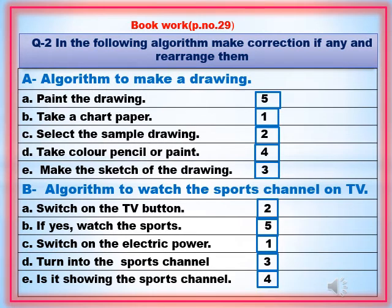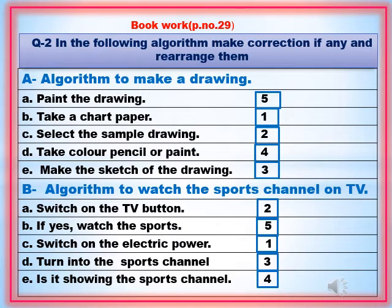Question number 2: In the following, make corrections to the algorithm if any, and rearrange them. You all know that an algorithm means setting work in logical sequence order. Two procedures are given below to arrange in correct sequence. Part A: Algorithm to make a drawing. When we start drawing, what steps do we need? Number 1: take a chart paper. Number 2: select the sample drawing. Number 3: make the sketch of the drawing. Number 4: take color pencils and paint. Number 5: paint the drawing. This is the correct order algorithm to make a drawing.